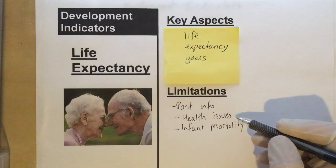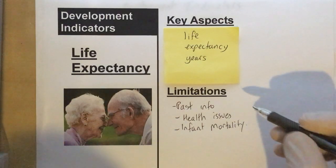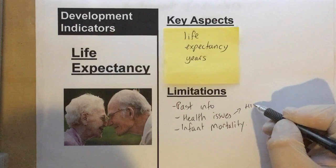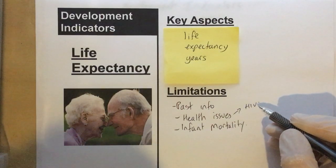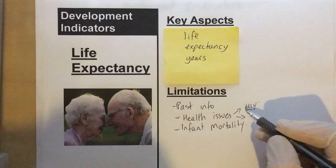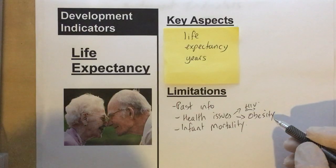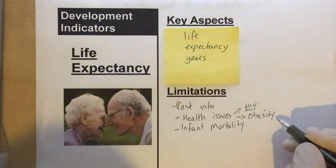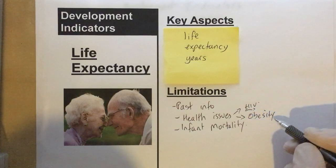It also doesn't tell us about the specific health context of a country. In some countries there might be increased HIV infections that will affect life expectancy rates, particularly where healthcare isn't as good. In many HICs there's an obesity problem that might affect life expectancy negatively, with issues around diabetes and cancer which are linked to obesity.